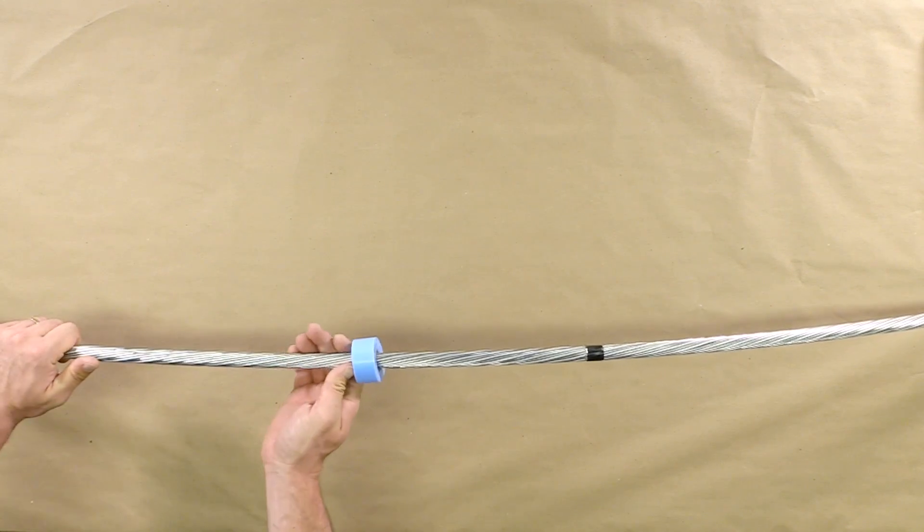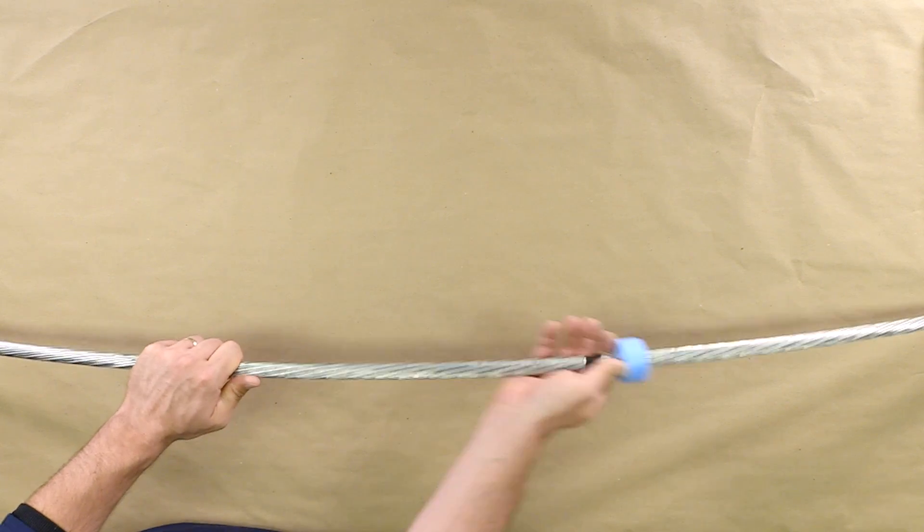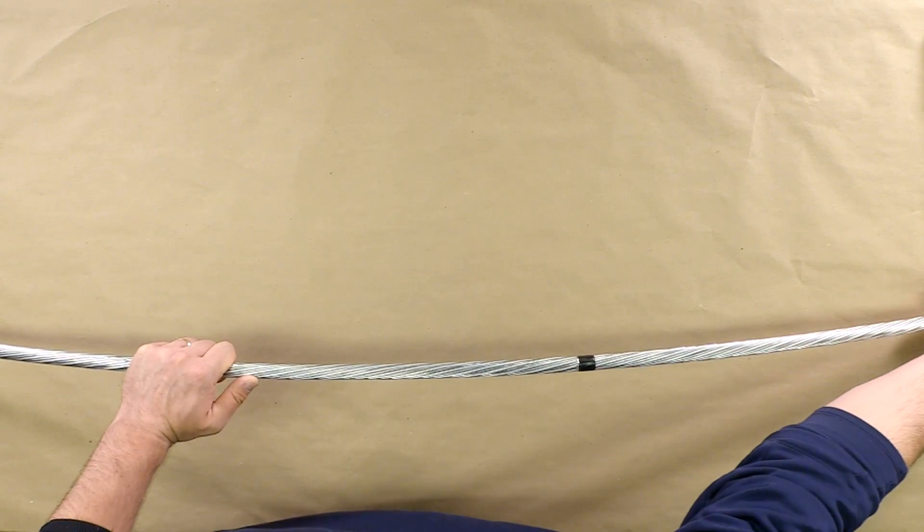Using a pie tape, measure the outer diameter of the cable and install the proper range grommet.